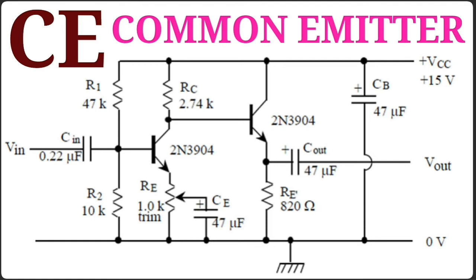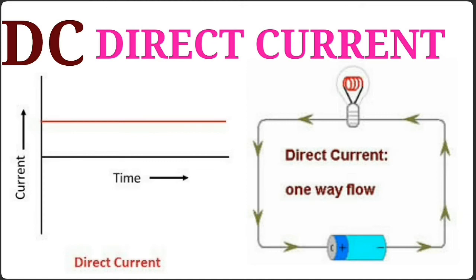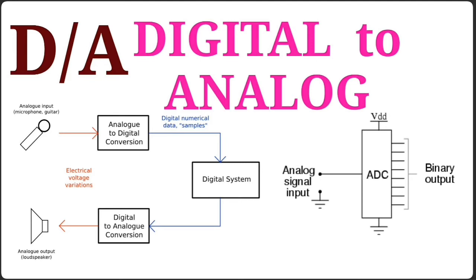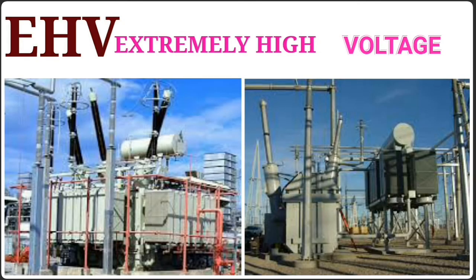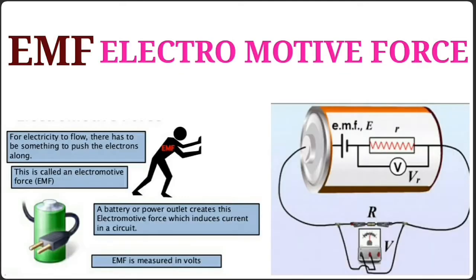DC – Direct Current. DA – Digital to Analog. DIP – Dual In-Line Package. EHV – Extremely High Voltage. EMF – Electromotive Force.